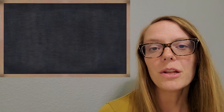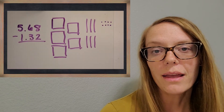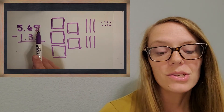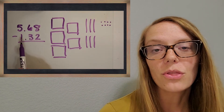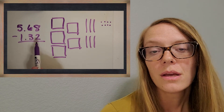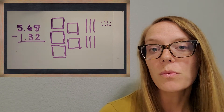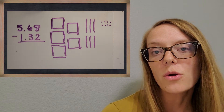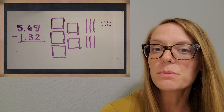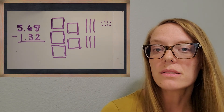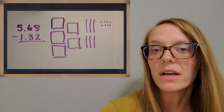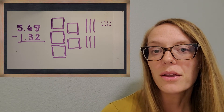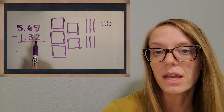So we're going to be working with 5 and 68 hundredths minus 1 and 32 hundredths. We always want to start with that smallest place value — we talked about this in the addition video. So what is the smallest place value in this problem? It's the hundredths place.